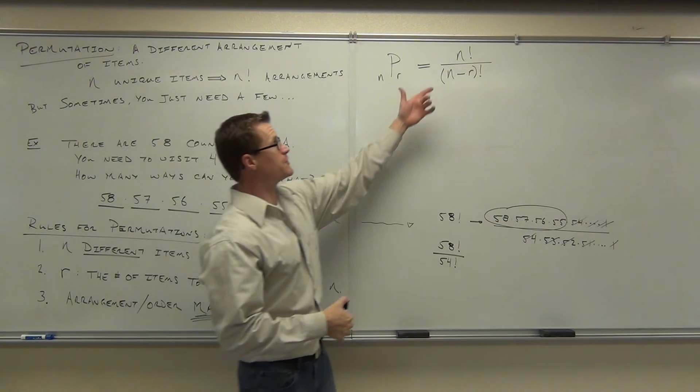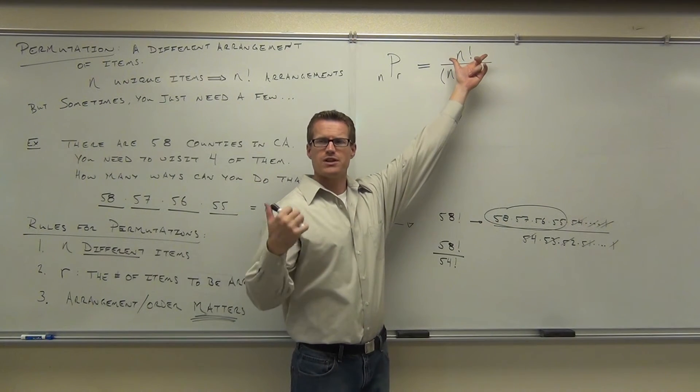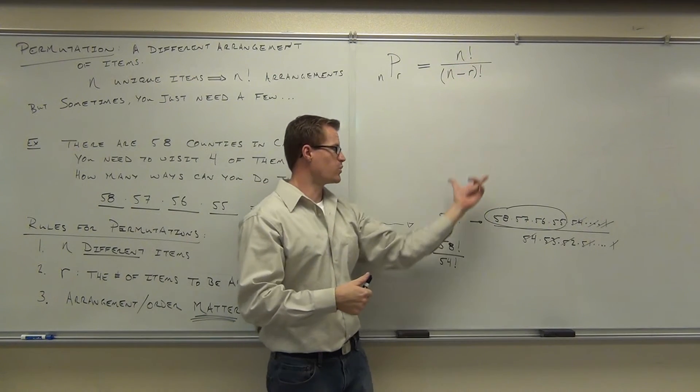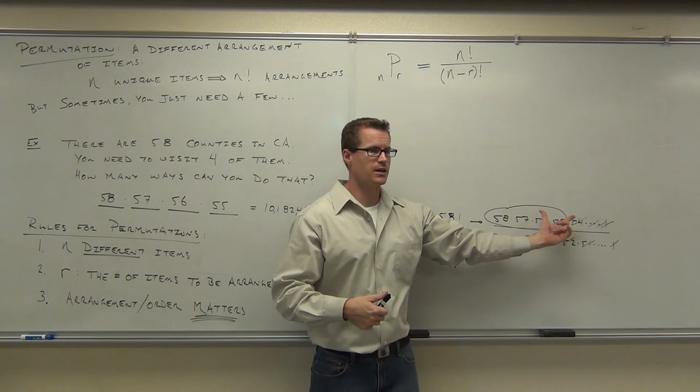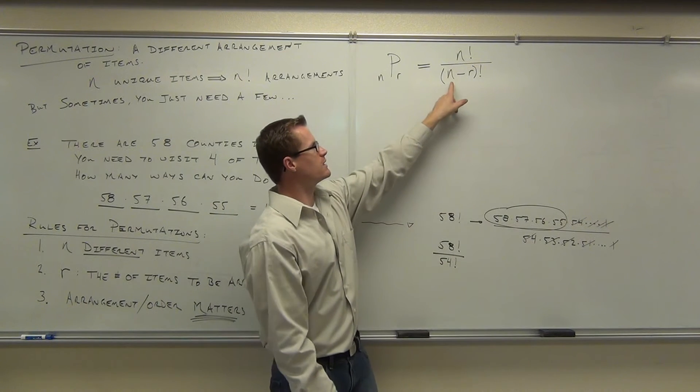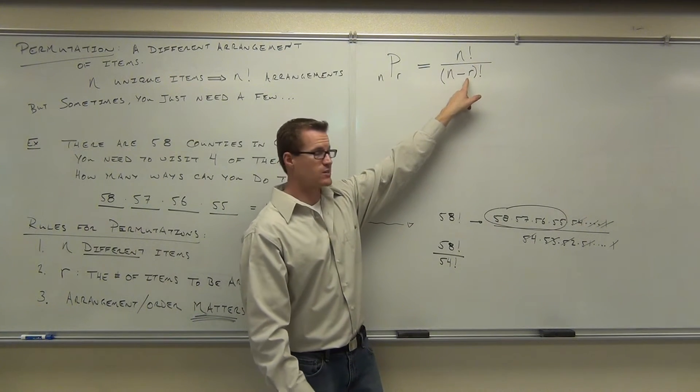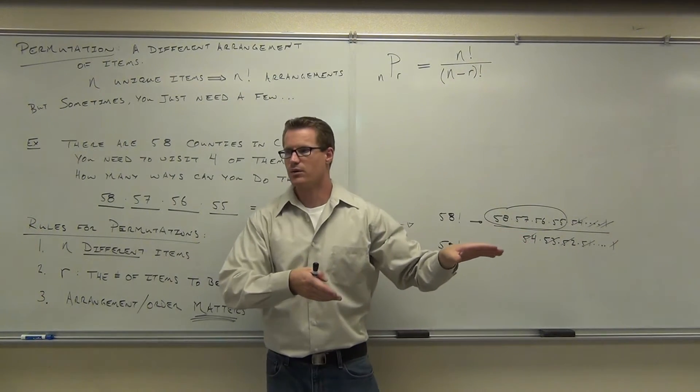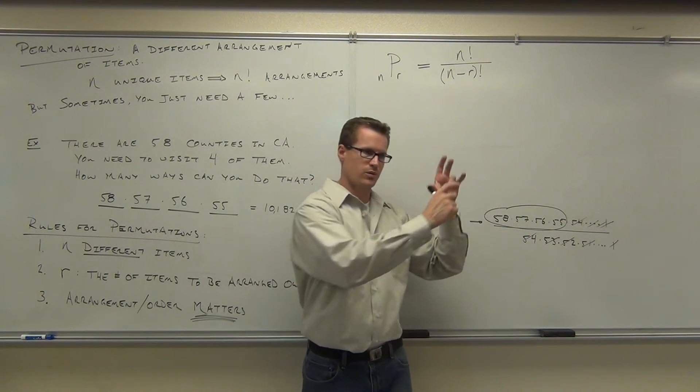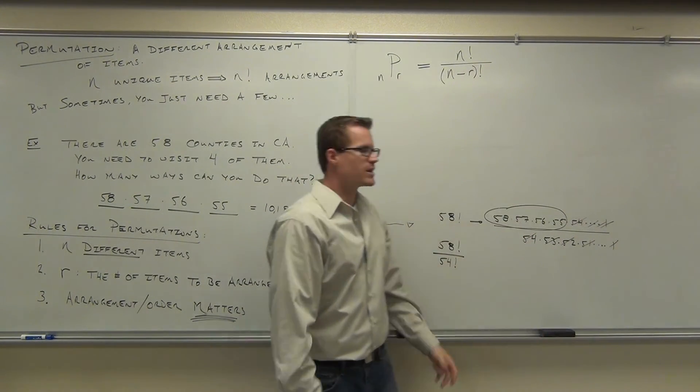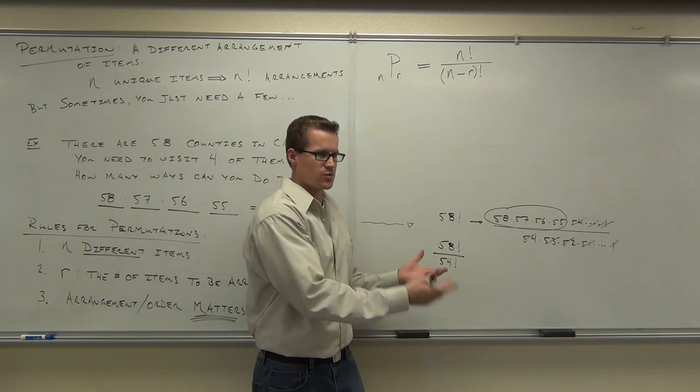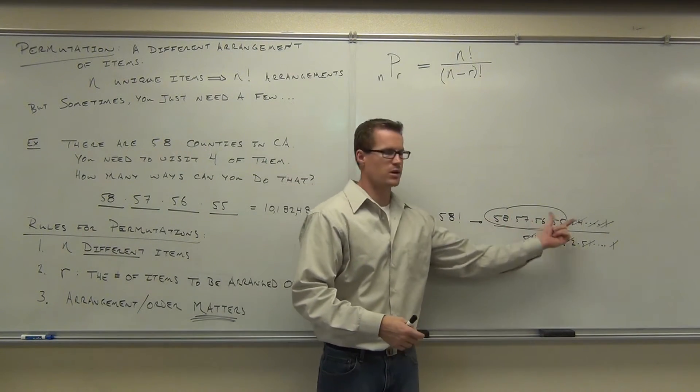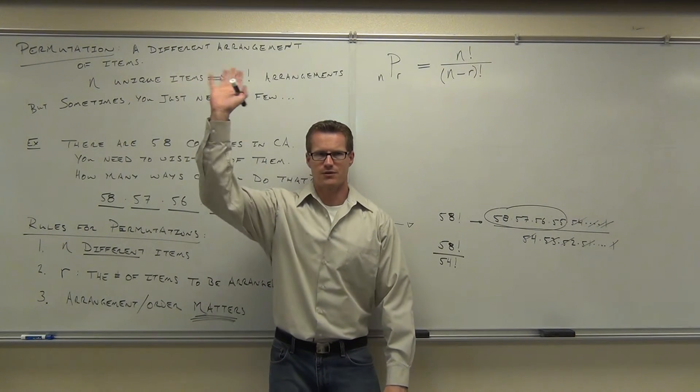In our case, in our example, we had 58 counties. Sure, that would be 58 factorial different arrangements we could originally go to if we went to all 58. But how many arrangements don't we need? We don't need the 58 minus the 4. That's our 54 of them. Those 54 arrangements, those are getting canceled out. Those are going to 1 when we take our numerator and denominator because we're not going to those 54 counties. We're only going to the first 1, 2, 3, 4 of them. How many people understand that? Feel okay about it?